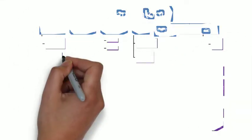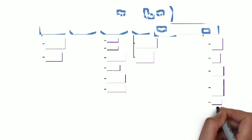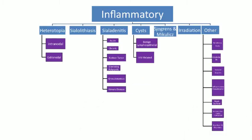Let's do a sketch as an overview of inflammatory salivary gland. Rosai divides these into heterotopia, sialolithiasis, sialadenitis, cysts, Sjogren's and Mikulich, irradiation, and other changes. We'll restrict ourselves to six categories: heterotopia, sialolithiasis, sialadenitis, cysts, Sjogren's, and irradiation.